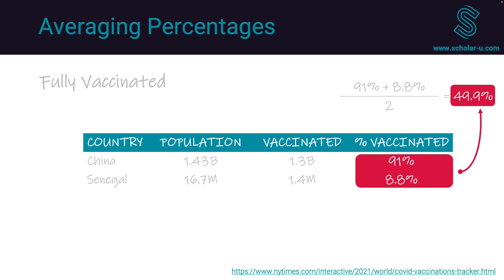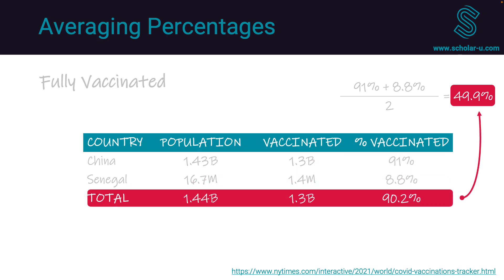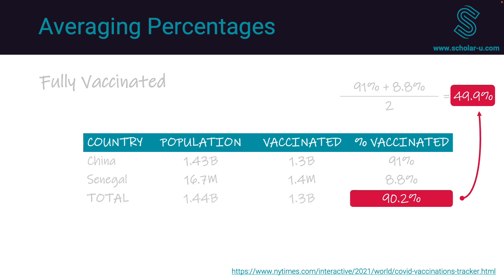If we average the percentages, we'd estimate about 50% of the combined population is vaccinated. However, looking at the totals row, the combined population is only slightly higher than China's alone, and the actual vaccination percentage comes out to 90.2% — far from the ~50% obtained by simple averaging. Therefore, if we wanted to determine worldwide vaccination rates, we could not simply average the percentages of all countries. What other misconceptions would you like us to explore? Please leave a note in the comments below.